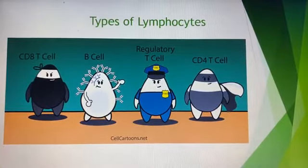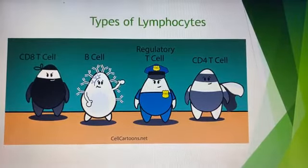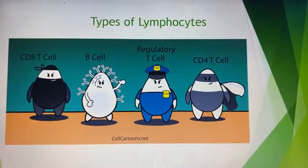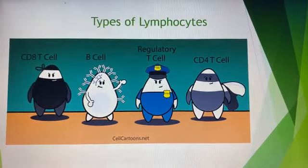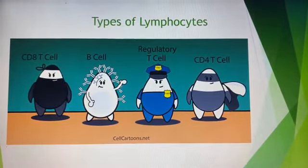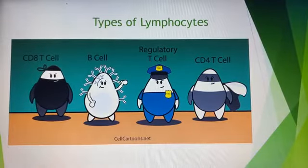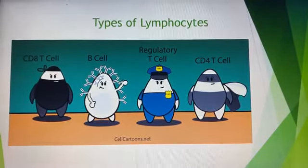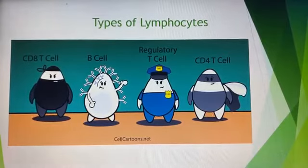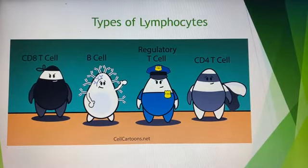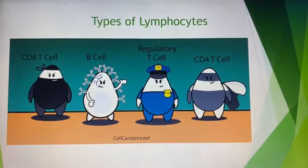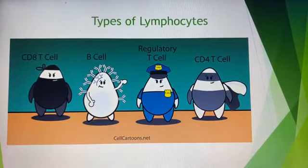The regulatory T cell promotes tolerance, just as an officer's duty is to ensure order. The cytotoxic T cell, shown as the cartoon on the left, is also known as the killer T cell. It is a special type of T cell because it has the ability to kill other cells — specifically cells that have been infected with a virus — so the virus can no longer use the cell to replicate.